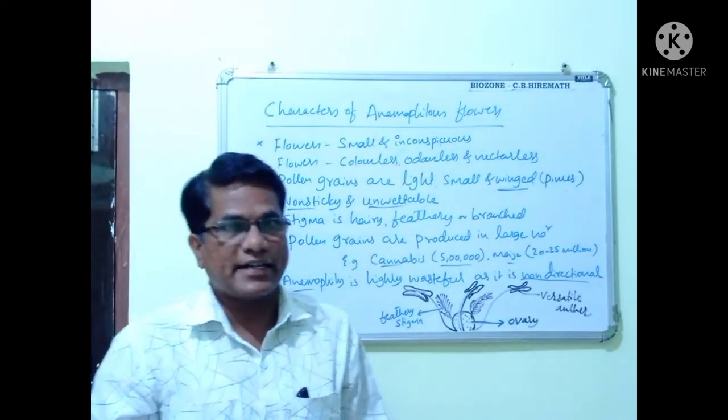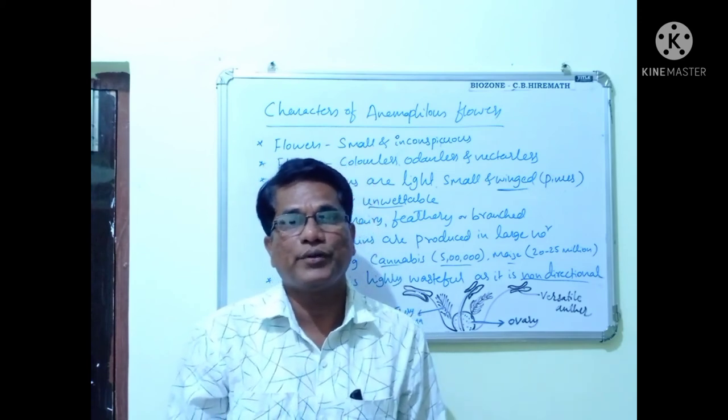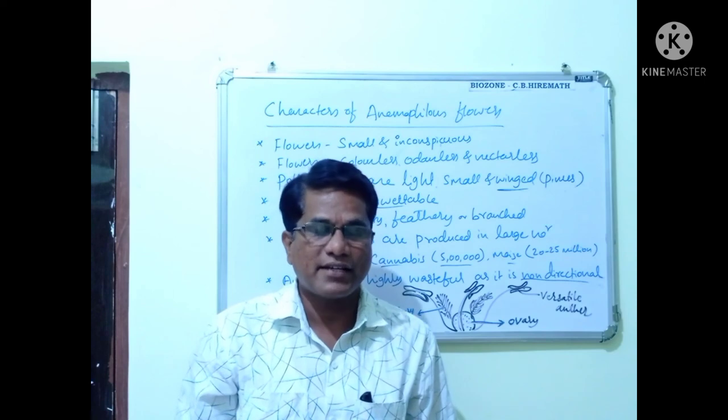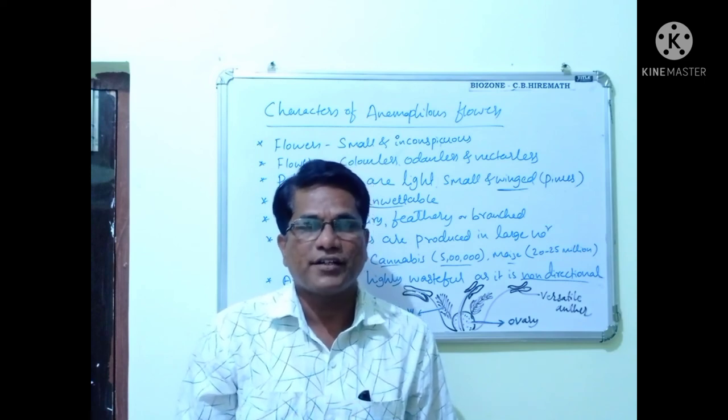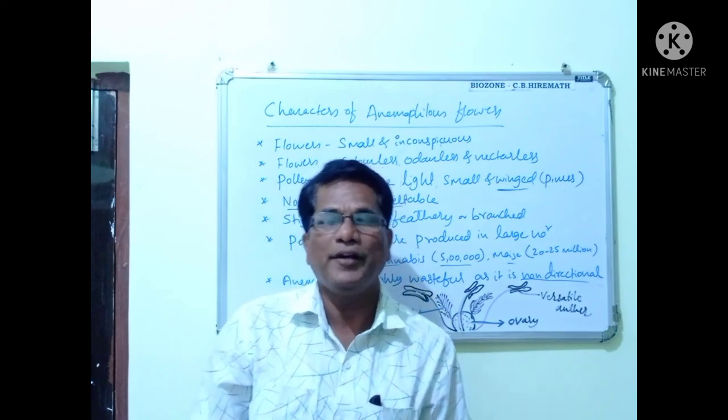So this is all about the important characteristic features of anemophilous flowers. In the next class we will discuss about entomophilous flowers. You know very well that if pollination occurs by insect, it is called entomophilous. Thank you for watching the video.